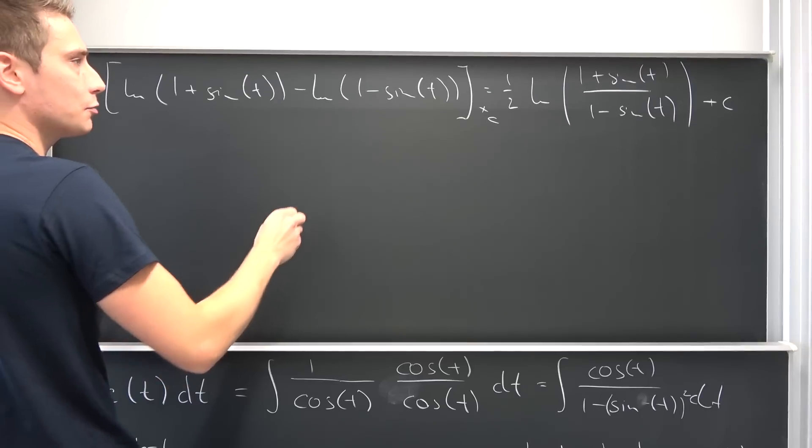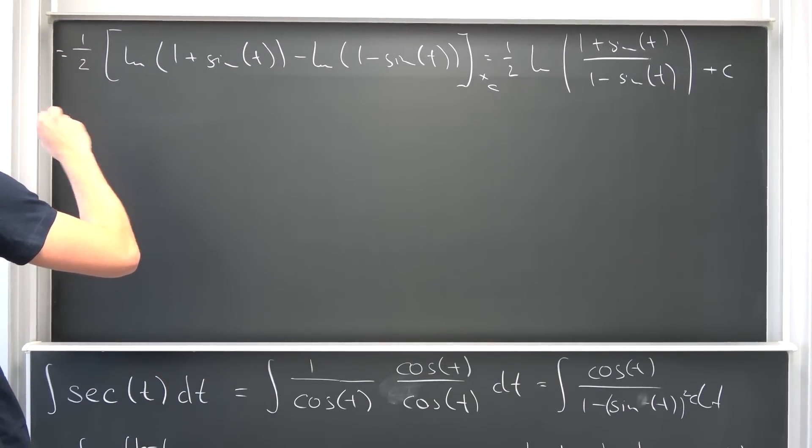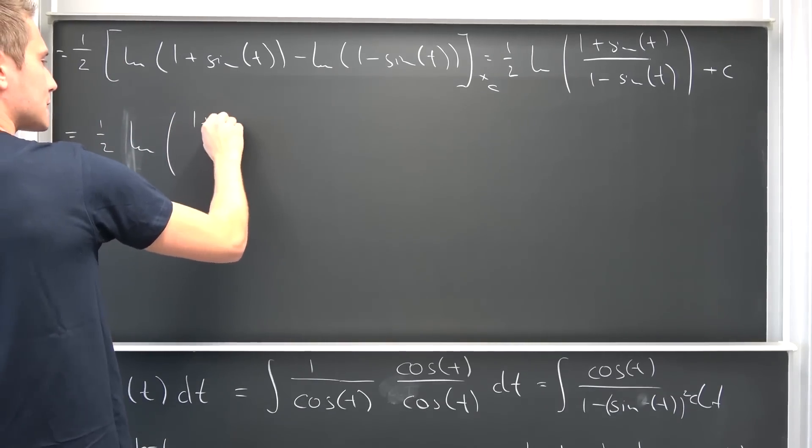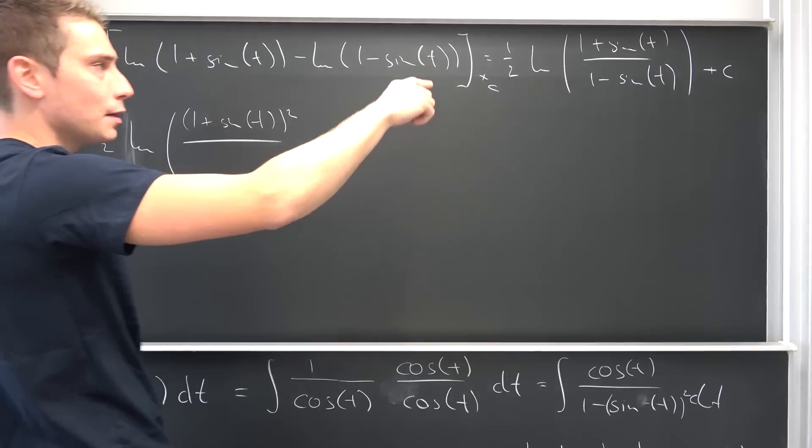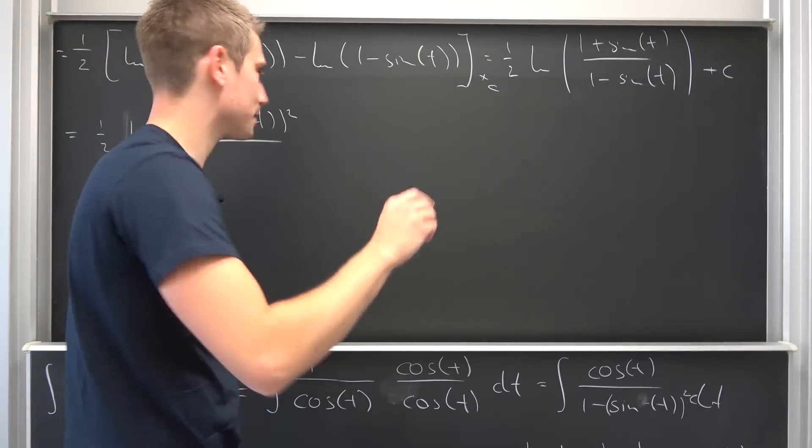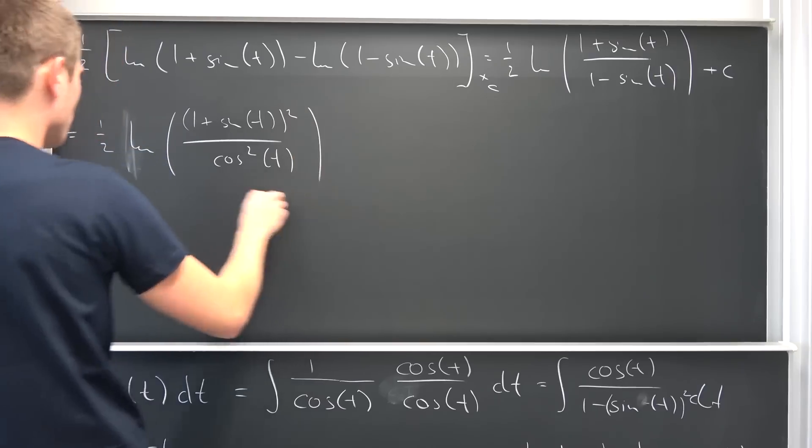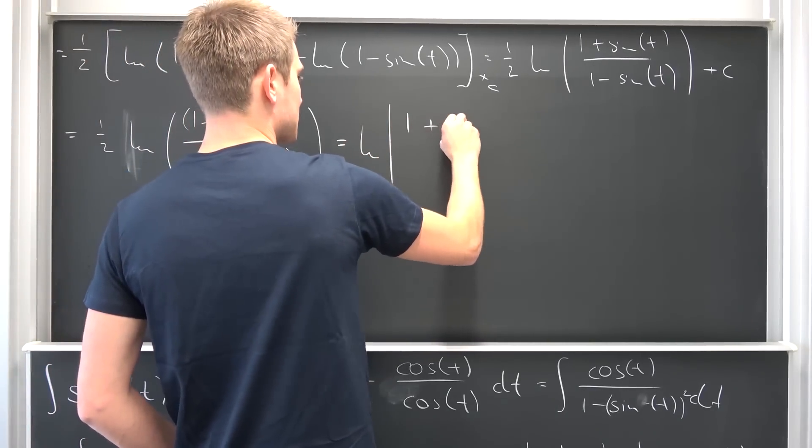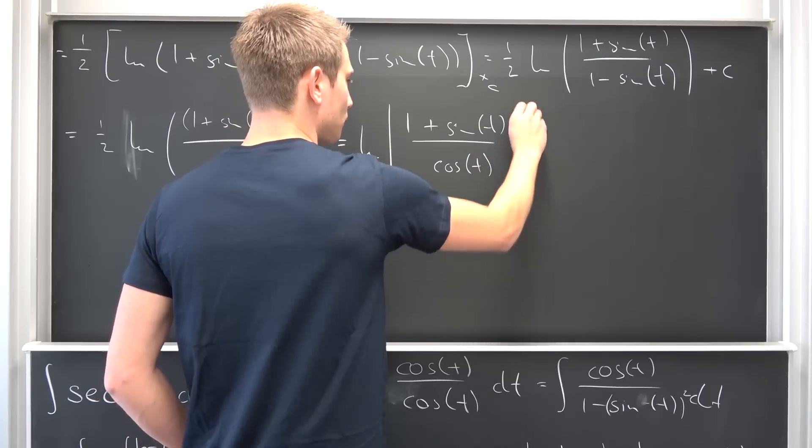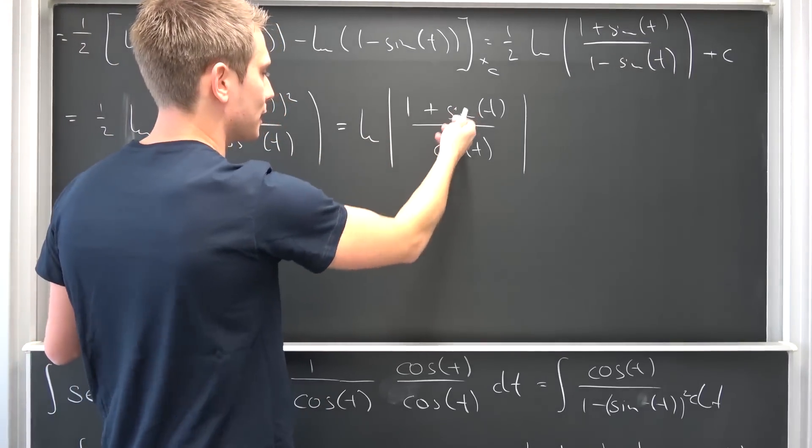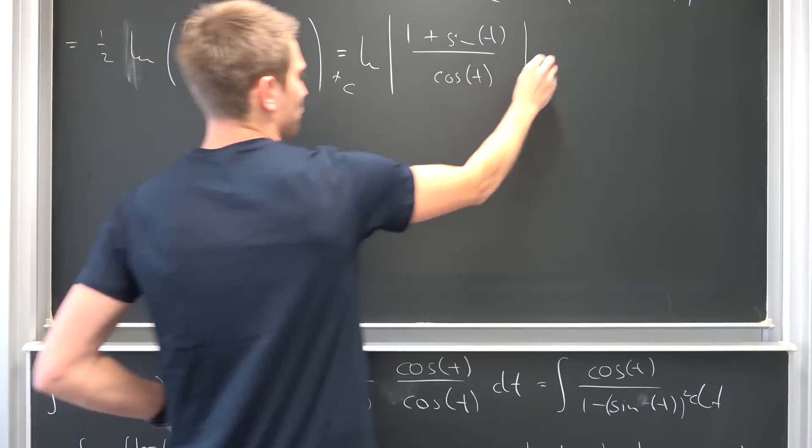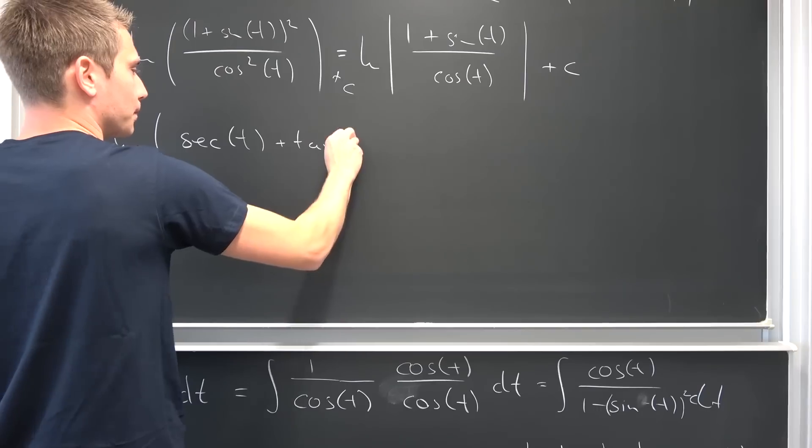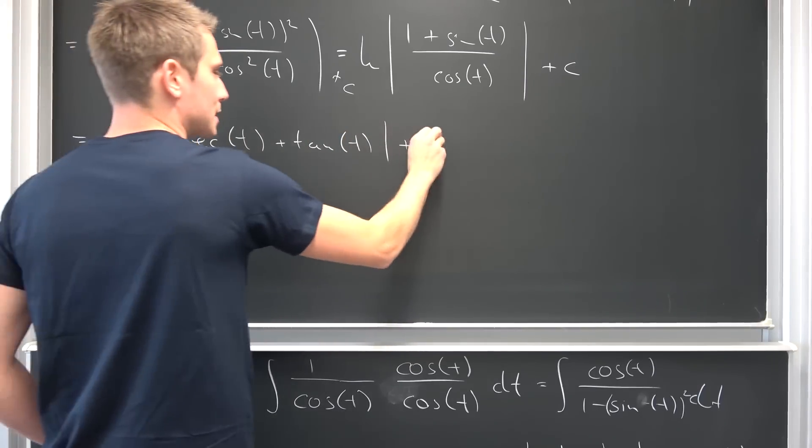Oh yeah, multiply top and bottom by one plus sine of t is going to give you one half the natural log of one plus sine of t squared over one minus sine squared, which is nothing other than the cosine squared of t. And now we can drag the one half into here as the square root. Meaning we are going to end up with the absolute value, natural log of the absolute value of one plus the sine of t over the cosine of t. One over cosine is the secant and then plus the tangent. So this is nothing other than the natural log of secant of t plus the tangent of t in absolute values plus some arbitrary constant c. And then we are done.